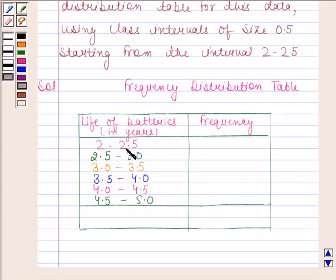Remember that 2.5 is not included in the 2 to 2.5 interval; it is included in the next interval. Similarly, 3.0 is not included in the 2.5 to 3.0 interval but in the next one. Keeping this in mind, we will now write the frequency of all the intervals.